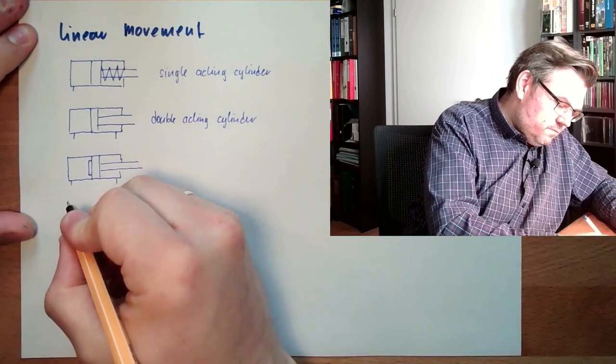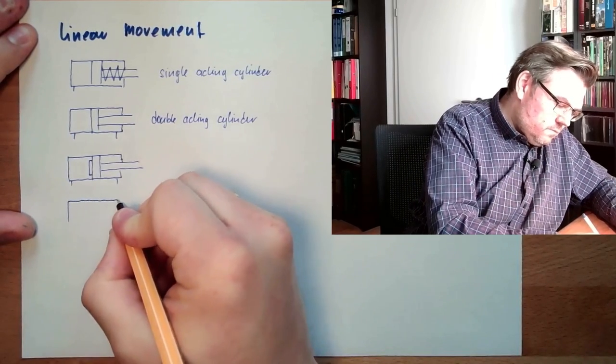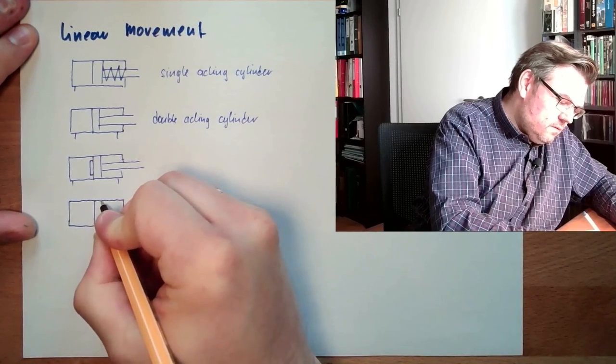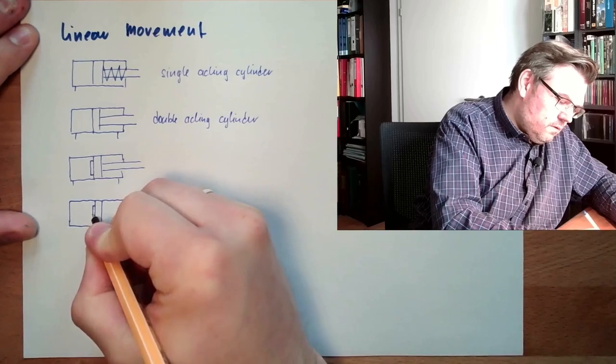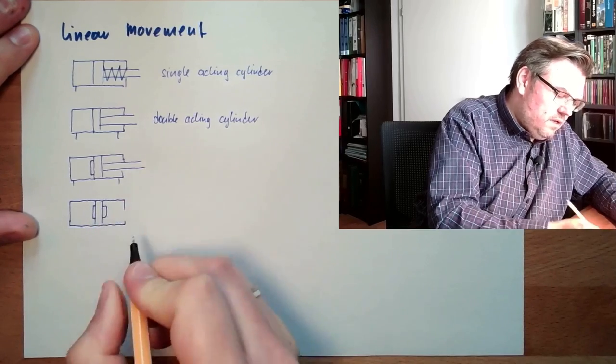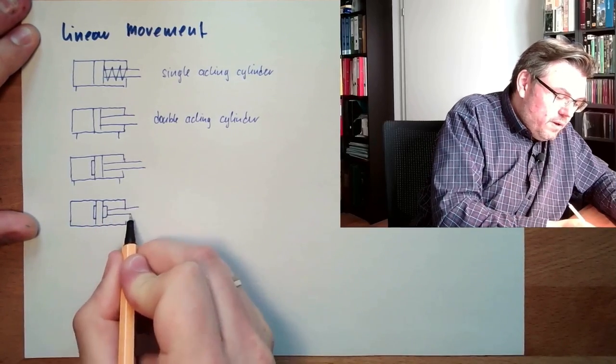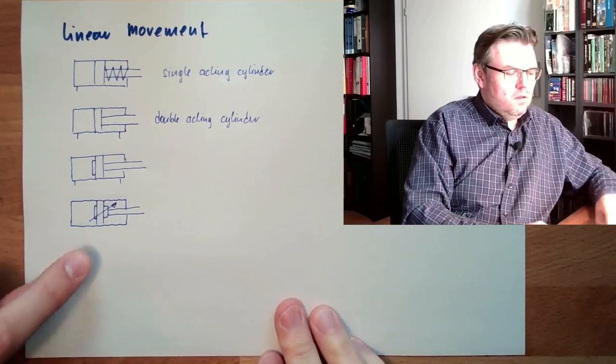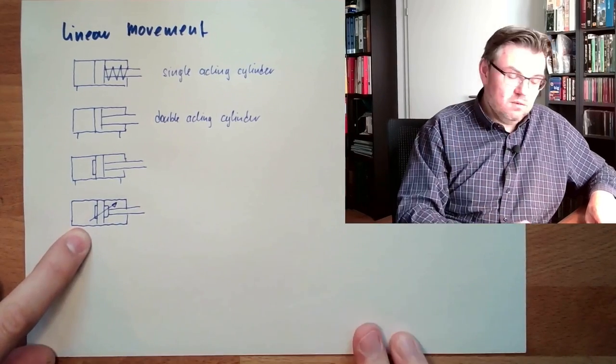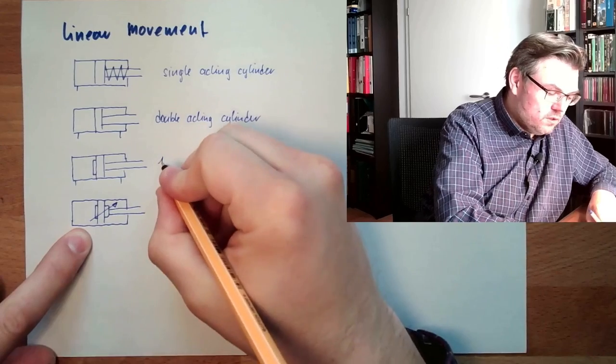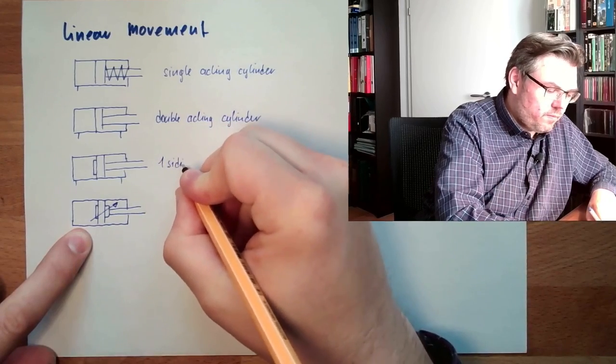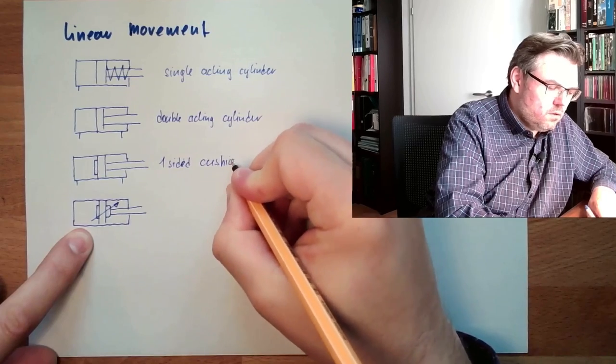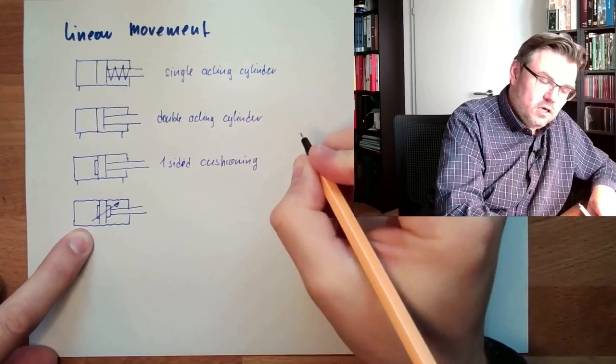Another example. This should simply symbolize the damping pistons. Another example. Damping piston here, damping piston here. Two damping pistons. And now, this arrow, even adjustable. This is one-sided damping. One-sided cushioning, not adjustable.